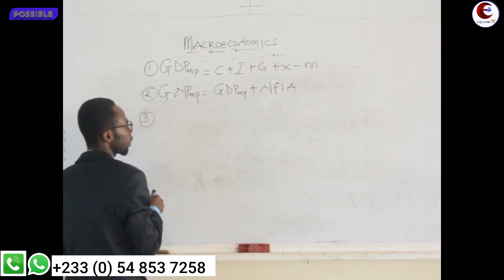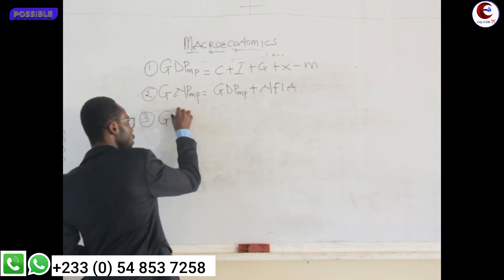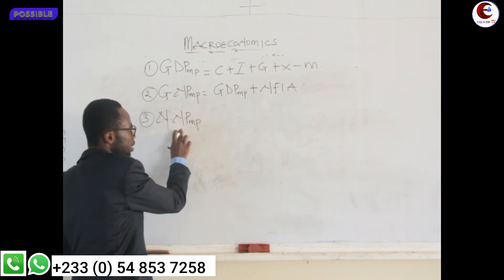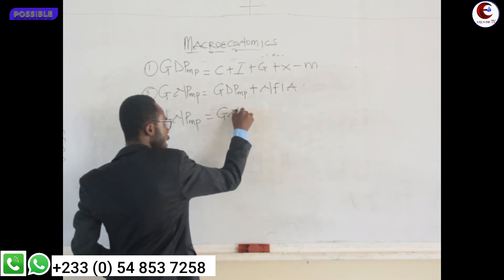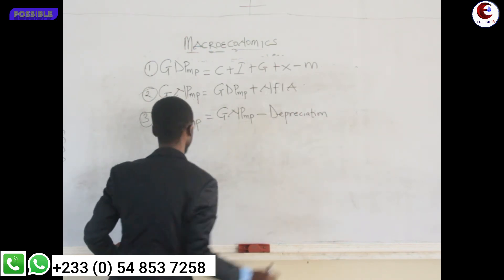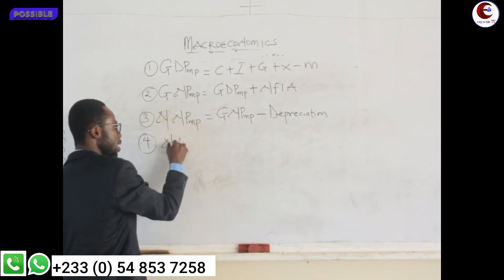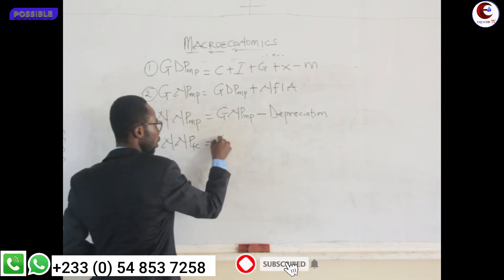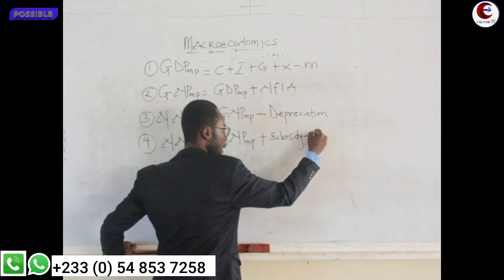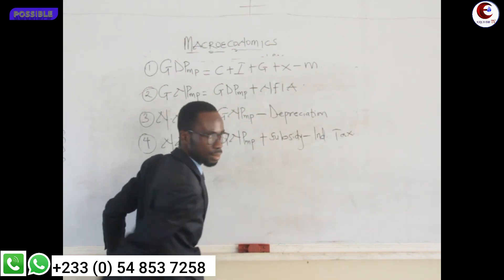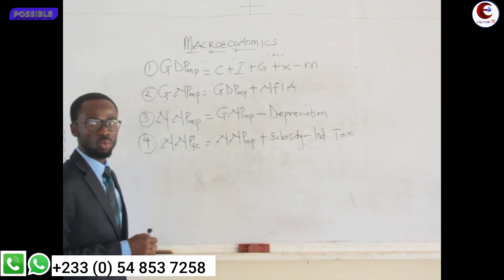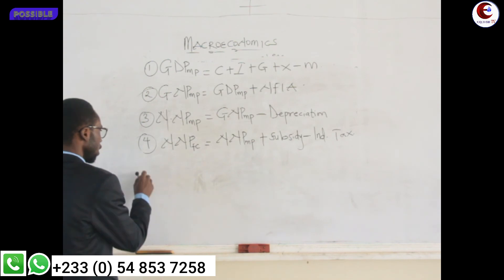Number three: NNP at market price is equal to GNP at market price minus depreciation. And NNP at factor cost is equal to NNP at market price plus subsidy minus indirect tax. Never be confused — these formulas can be written in shorthand.